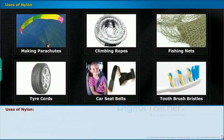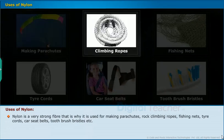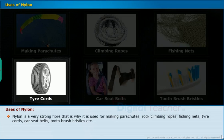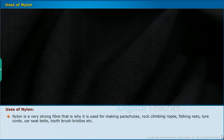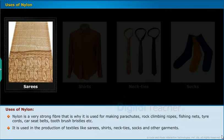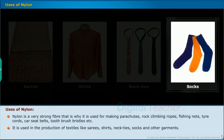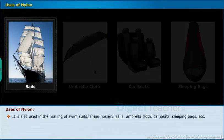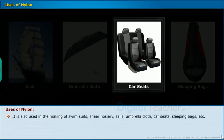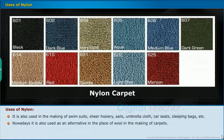Uses of Nylon: Nylon is a very strong fiber and is used for making parachutes, rock climbing ropes, fishing nets, tire cords, seat belts and toothbrush bristles. It is used in the production of textiles like saris, shirts, neckties and socks. It is also used in making swimsuits, sheer hosiery, sails, umbrella cloth, car seats and sleeping bags. Nowadays, it is also used as an alternative to wool in the making of carpets.